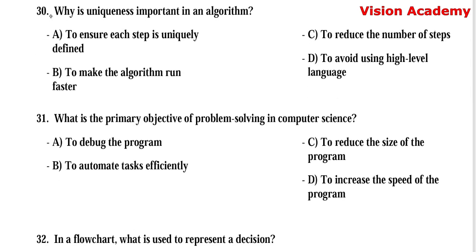Question number 30: Why is uniqueness important in an algorithm? Option A, to ensure each step is uniquely defined. Option B, to make the algorithm run faster. Option C, to reduce the number of steps. Option D, to avoid using high-level language. Here, option A, to ensure each step is uniquely defined, is the right answer.